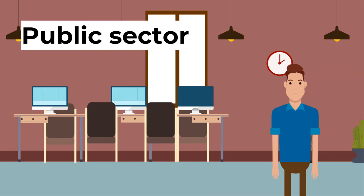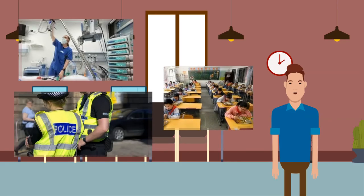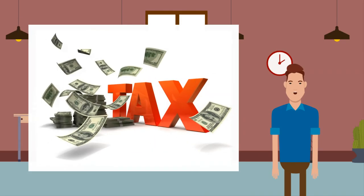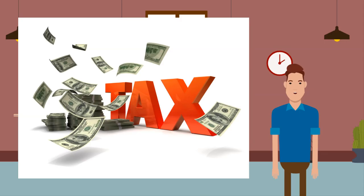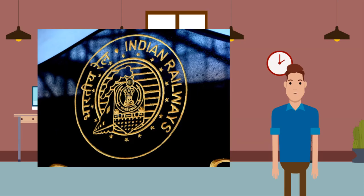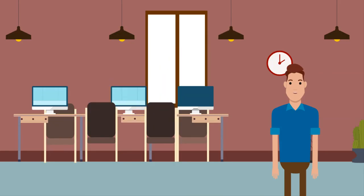Next, the public sector — this is where the government owns and runs business ventures. Their aim is to provide essential public goods and services. Examples are schools, hospitals and police. They don't work to earn a profit; it is funded by the tax-paying citizens' money, so they work in the interest of these citizens to provide them with services. An example is the Indian Railways, which is a public sector organization owned by the government of India. In a mixed economy, both the public and private sector exist.